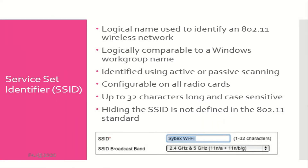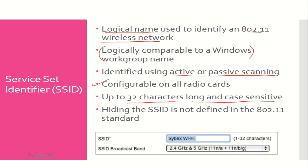Service set identifier (SSID) is a logical name used to identify an 802.11 wireless network, logically comparable to a Windows workgroup name. It is identified using active or passive scanning, is configurable on all radio cards, and is up to 32 characters long and case sensitive. Hiding the SSID is a very weak attempted security measure that is not defined in the 802.11 standard.